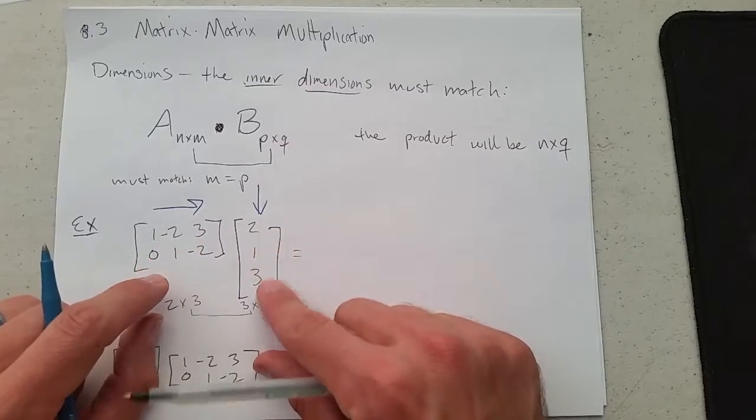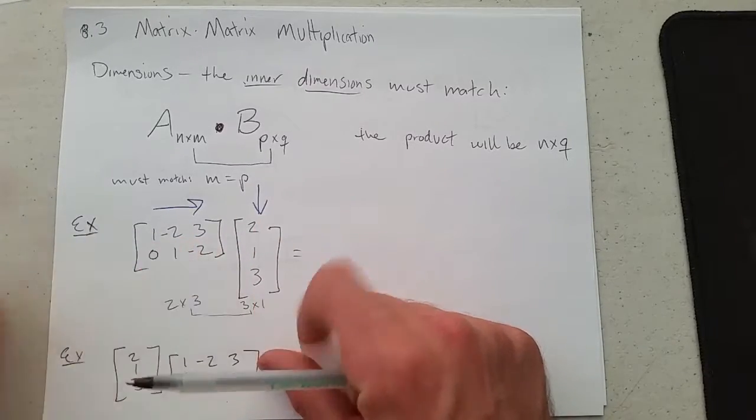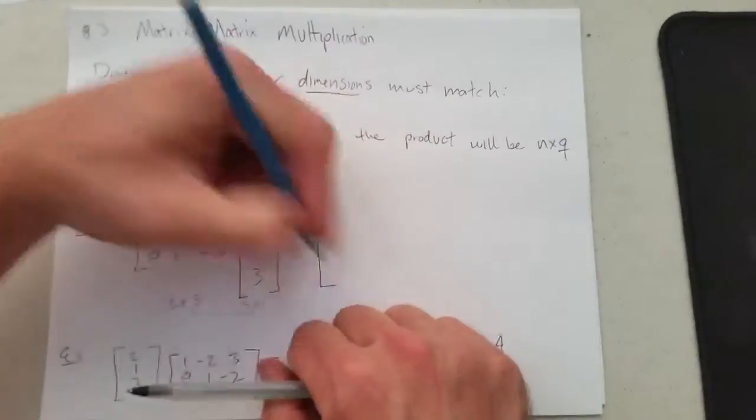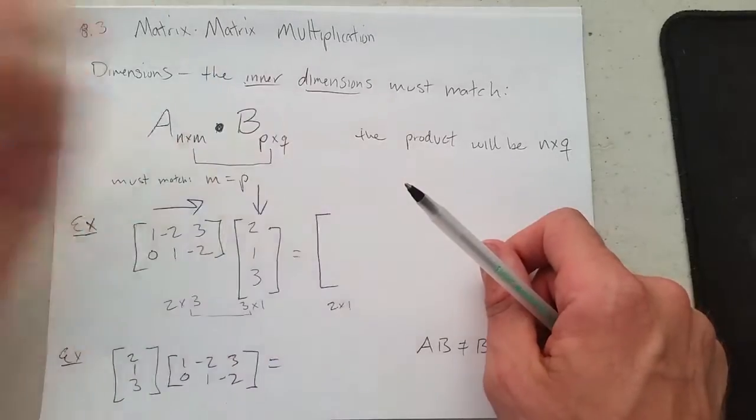One, two, three, one, two, three. So there needs to be three columns, three rows, so things match up. I can already tell my inner dimensions match. My final dimensions should be a two by one matrix.